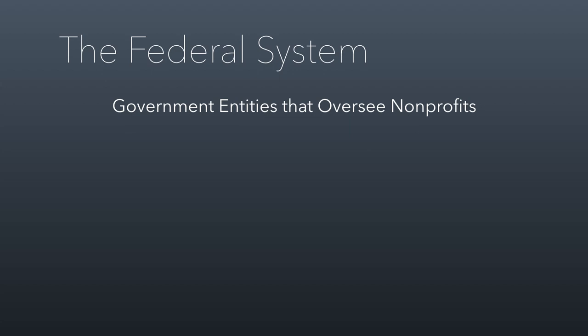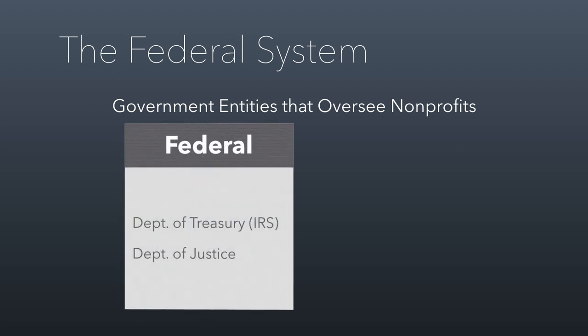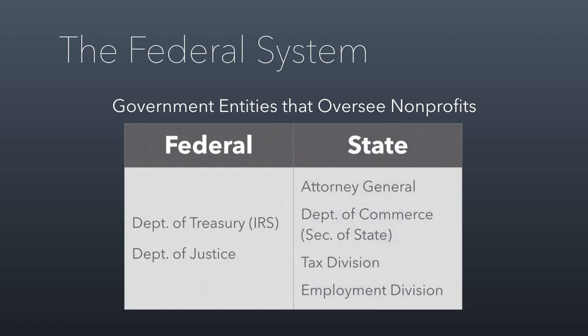Within that federal legal system, those powers are embodied in organizations that can enforce the laws subject to their purview. Under the federal government, you've got the Department of Treasury that enforces tax law through the IRS, and the Department of Justice that enforces other criminal laws. At the state level, the attorney general can uniquely oversee nonprofits. The Department of Commerce oversees corporations and creates charters — in some states, that's the Secretary of State. The tax division oversees income tax, property tax, and sales tax issues. And the employment division oversees any employer, which includes nonprofit employers.